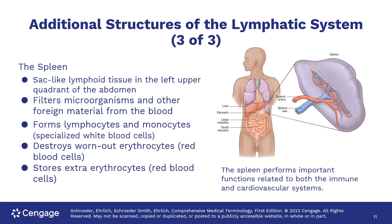A major organ of the lymph system is the spleen, located in the left upper quadrant. It filters foreign organisms and materials out of the blood and forms two types of leukocytes: the lymphocytes and the monocytes. It also gets rid of old red blood cells and stores an extra supply.